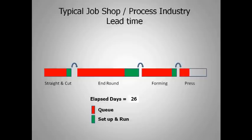In this example, the red is showing the amount of time that the job is stopped waiting for the jobs in front of it to be worked on. The green shows the actual setup and run time when capacity of the work center is being consumed. This is a classic job shop and process industry environment.